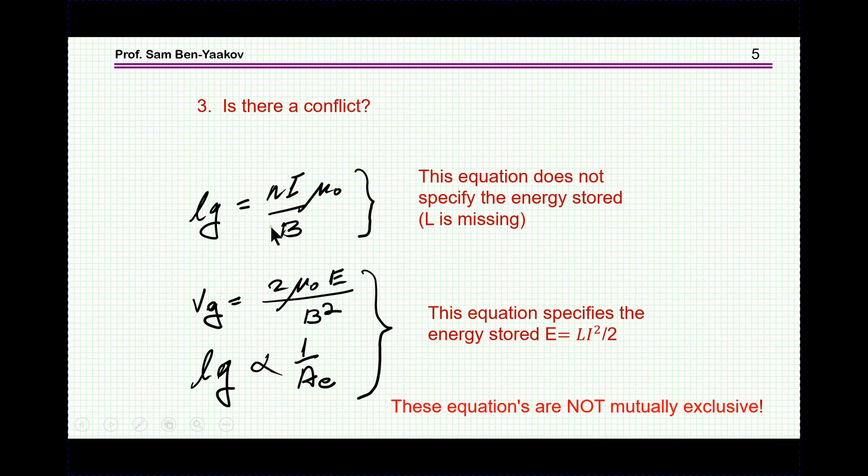In other words, this formula is just talking about I. This is always correct. But how would you know that in any given design, the energy stored would be what you need, or in other words, that the inductance that you need can be obtained? On the other hand, this formula is talking about the energy, which includes the LI squared over 2.